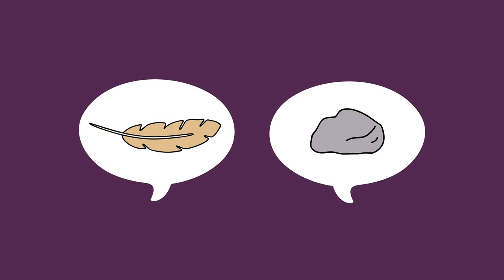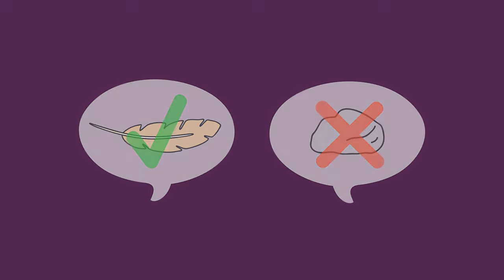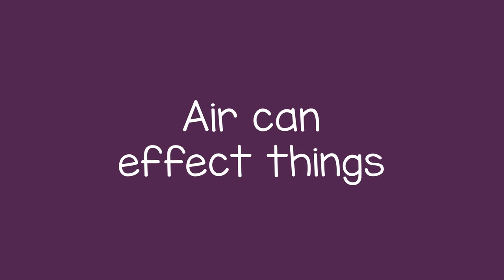You can talk about how some objects are easier to move than others. This activity helps a child understand that, even though we can't see the air, it can affect the things around us.